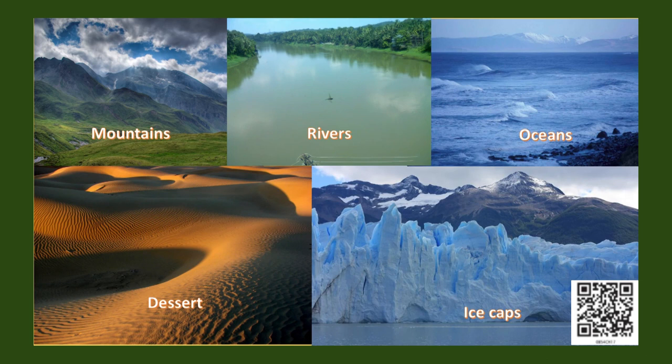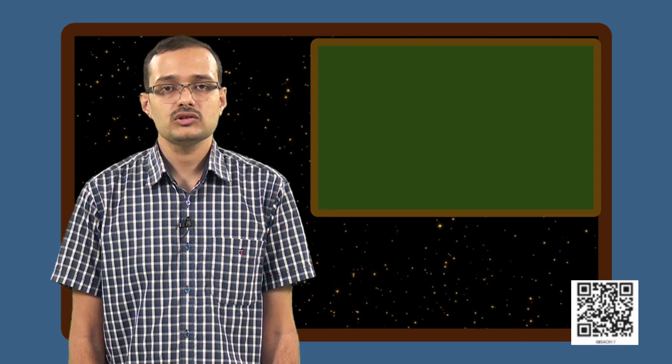On earth, we see a lot of geographical features. We see mountains, rivers, oceans, deserts, ice caps, etc. Earth also has a weather system. We experience hot summers, cold winters, some places experience very heavy rainfall, some places experience snowfall. Do you know why this happens?